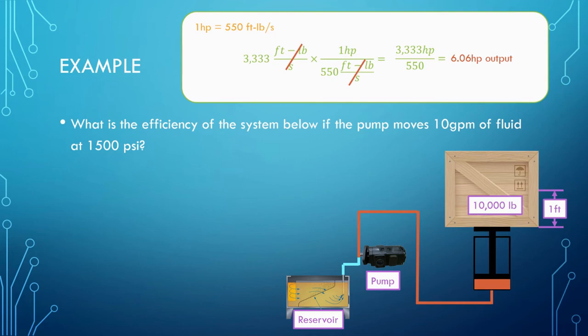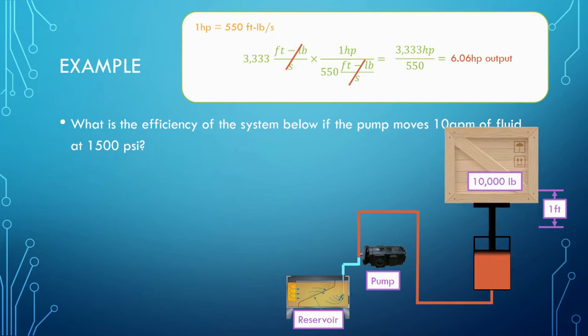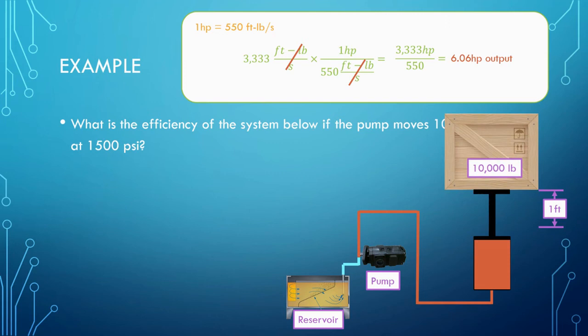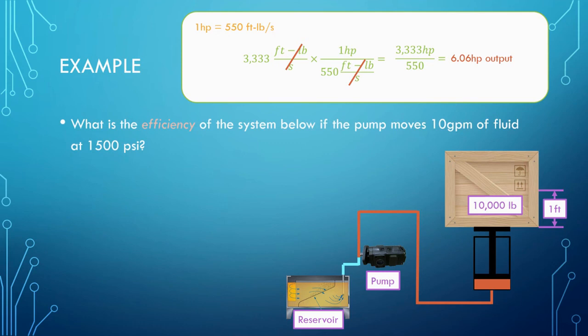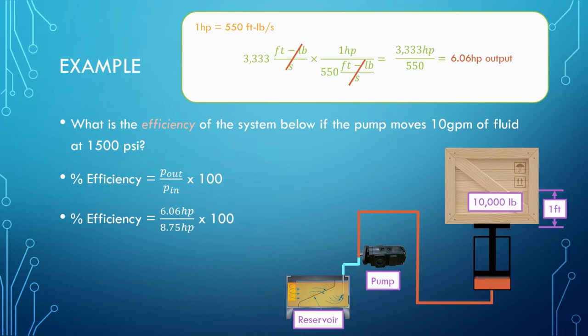What is the efficiency of the system if the pump moves 10 gallons per minute of fluid at 1500 psi? To find the efficiency of the system, we have to compare the output power with the input power. The input power can be calculated using the rate of flow 10 gallons per minute and the pressure 1500 psi. 10 times 1500 divided by the horsepower constant 1714 equals 8.75 horsepower supplied by the input. The percent efficiency can be found by dividing the output power by the input power and multiplying the result by 100. 6.06 horsepower divided by 8.75 horsepower times 100 equals an efficiency of about 69%.